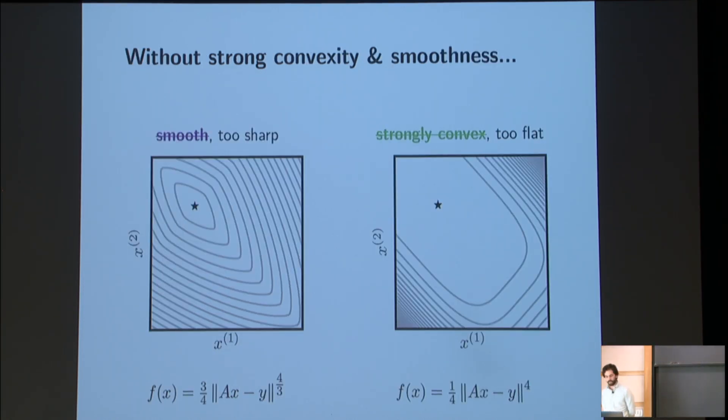OK, so what can go wrong if we remove these conditions? OK, so the function on the left is not a smooth function at its minimum. This is a function that is behaving like the power 4 thirds. And so the Hessian at the minimum at the star is unbounded. And intuitively, functions that are not smooth have some amount of sort of sharpness in their surface. The function on the right is not strongly convex. It's behaving like the power 4 at its minimum. And functions that are not strongly convex have some amount of flatness in their surface.